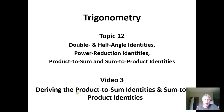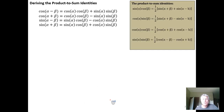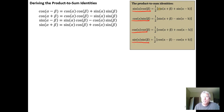In this video we're going to go over how to derive the product-to-sum and the sum-to-product identities. On the right there's a list of the product-to-sum identities, and in each of these four identities we have a product — either sine times cosine, cosine times sine, cosine times cosine, or sine times sine — that is rewritten in terms of the sum or difference of cosine and sine functions. That's why these are called product-to-sum identities.